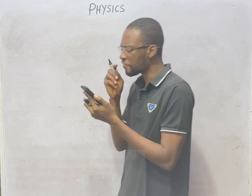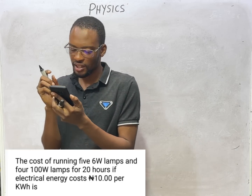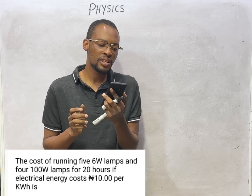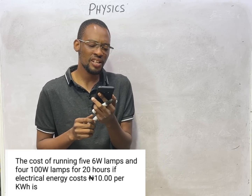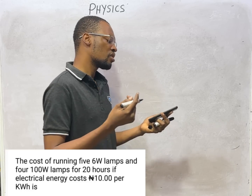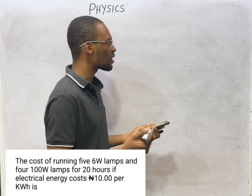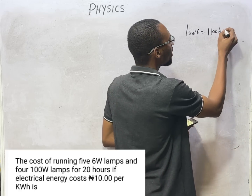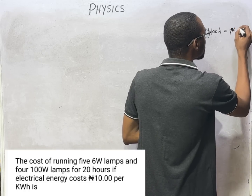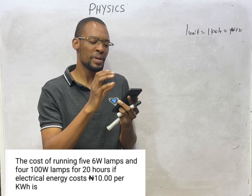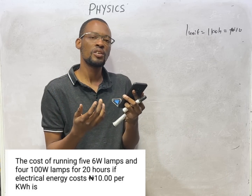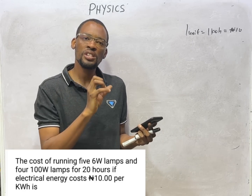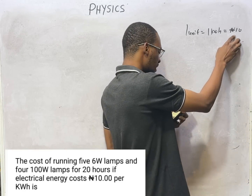The cost of running 5 60-watt lamps and 4 400-watt lamps for 20 hours — if electrical energy costs 10 Naira per kilowatt hour. Kilowatt hour cost is 1 unit cost. I told you that 1 unit is the same thing as 1 kilowatt hour, which is energy. They are saying that 1 unit costs 10 Naira. So how much does the person having all these lamps spend? To know how much, we need to know how many units this person is consuming. If we know the units consumed and multiply by 10 Naira, which is cost per unit, we know how much this person is spending.